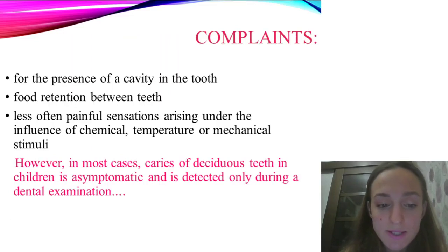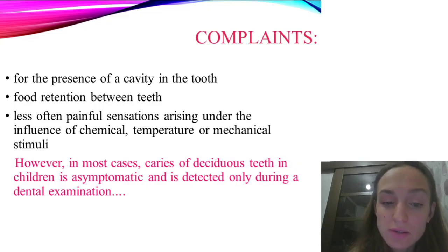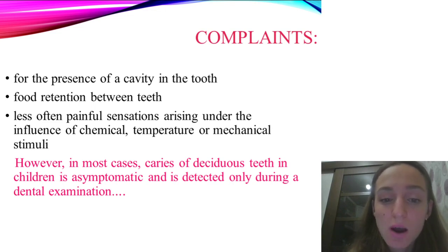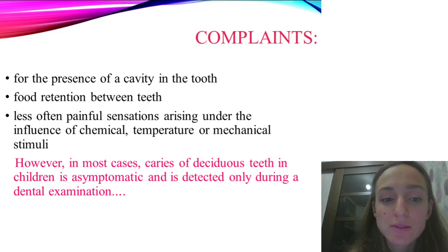Caries progress in deciduous teeth of young children has particular features. The method of child feeding is very important — most bottle-fed children have caries-affected teeth earlier and the caries process is more active than in breastfed children. Caries in deciduous teeth at the stage of root formation is characterized by acute and subacute progress. Carious lesions are mainly localized in the cervical areas of upper incisors and in fissures of the first and second deciduous molars. Caries progresses fast and spreads through dental surfaces, moving into caries-resistant zones — the vestibular surface of incisors and tubercles of molars.